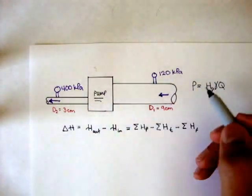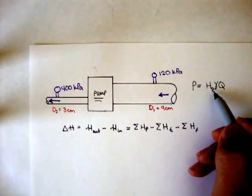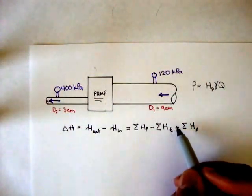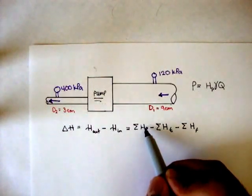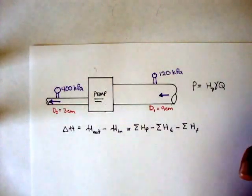And if there was a turbine, and they said, what was the power of the turbine? You would change this hp to ht. You would figure out the turbine head. And if you wanted to figure out the power of the pump, you would use the pump head to find power in kilowatts.